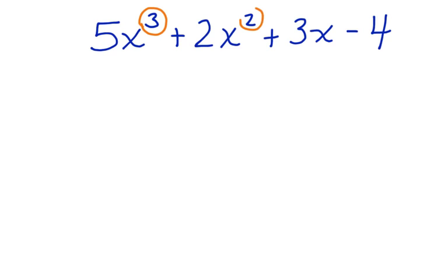3, 2, we know this one has a 1, and then the constant is at the end. This is a polynomial in order.